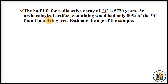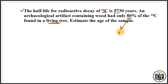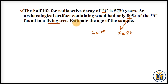An archaeological artifact containing wood had only 80% of the carbon-14 found in a living tree. 80% is the remaining amount of carbon-14, meaning this is the final amount. Since the value is given in percentage, the initial amount will be 100 and the remaining final amount is 80.